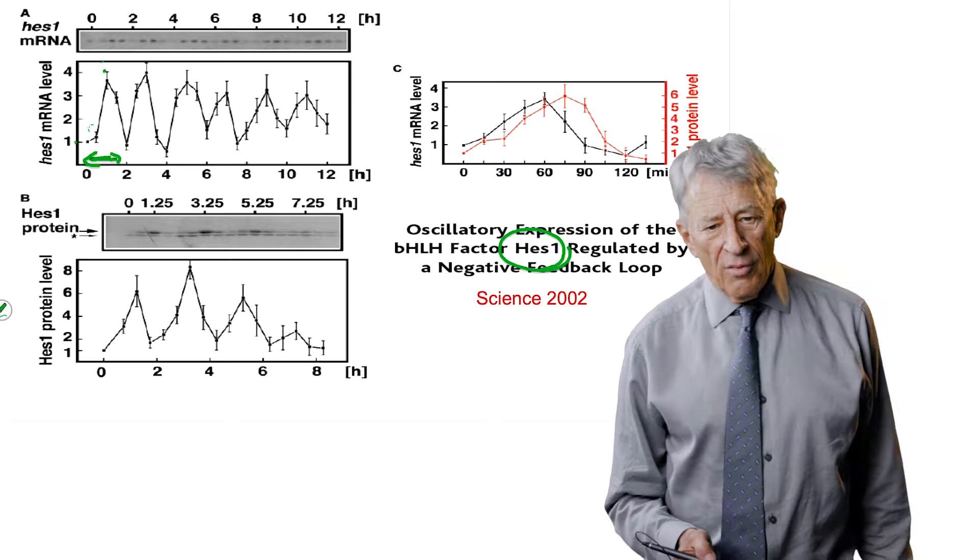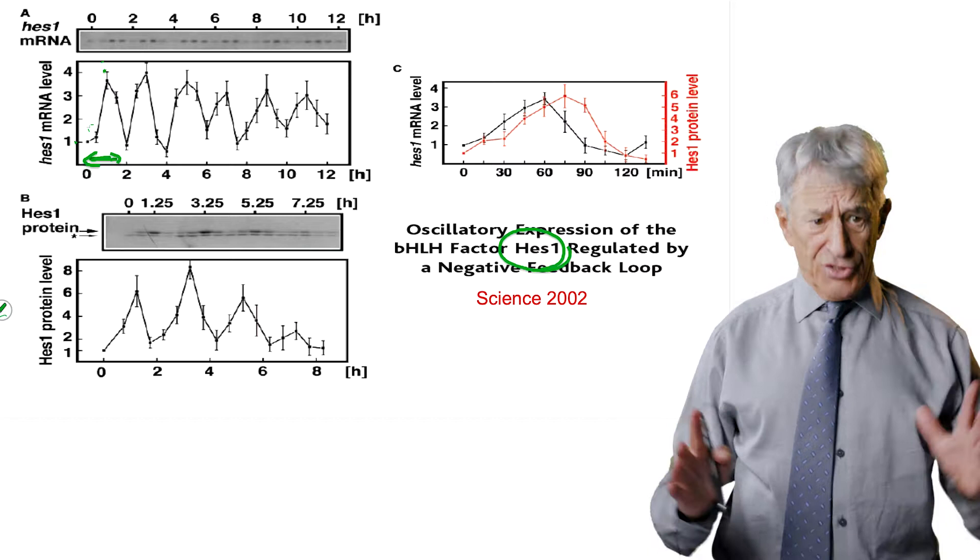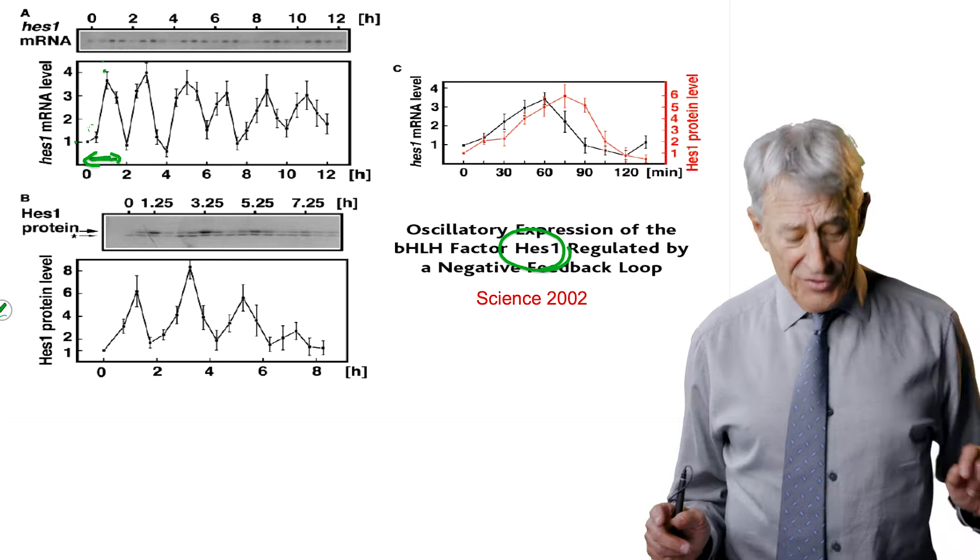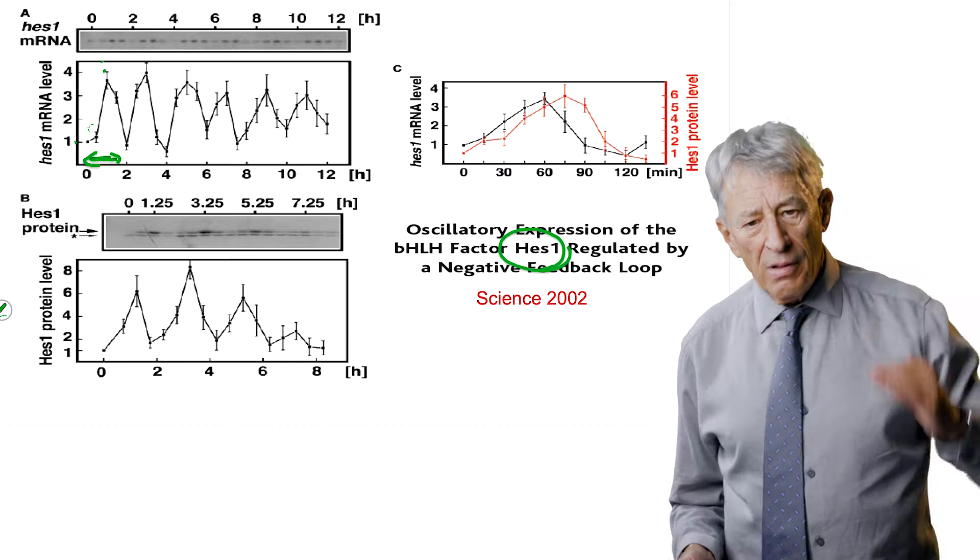Now, in a lot of labs, if you have gene expression went up by a factor of four, you start writing the paper. That's considered a major increase in gene expression. But what these folks are saying is, that happens every two hours on its own. And this is an oscillation in gene expression.